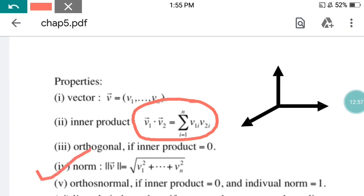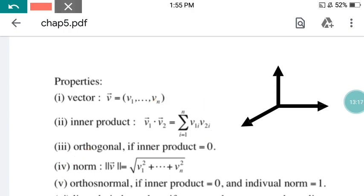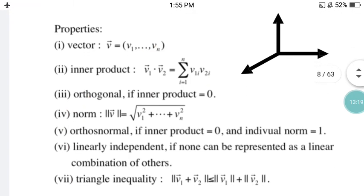Property 4 is the norm: mod(V) equals the square root of V1² + V2² + V3² up to Vn². The next part is the orthonormal: if the inner product is 0 and the individual norm is 1, this is called orthonormal.